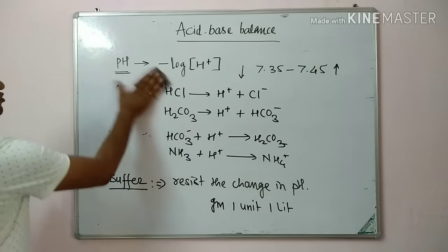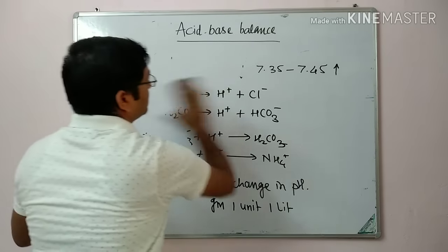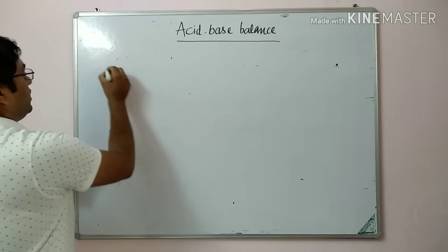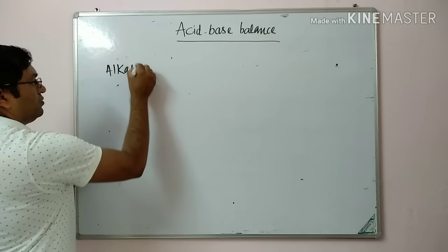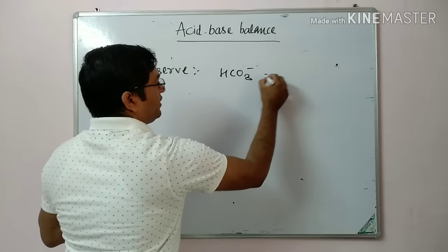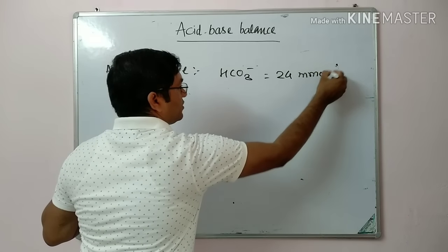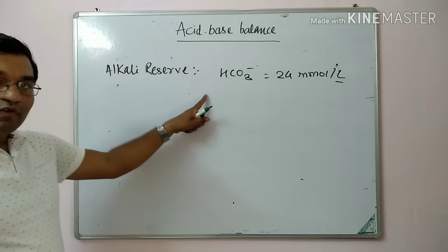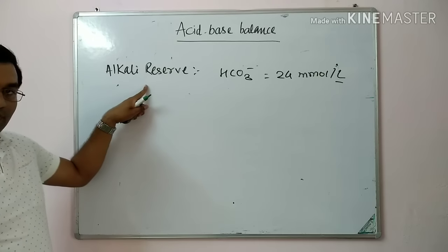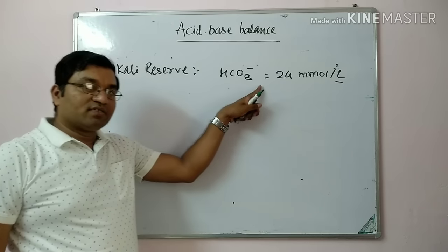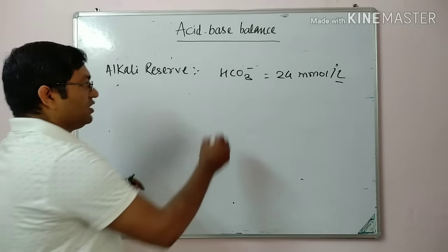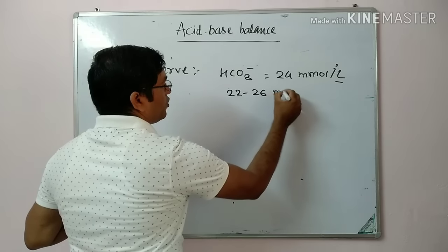Alkali reserve means the bicarbonate concentration, which is 24 millimole per liter. It is the bicarbonate available to overcome the acids synthesized in our body. The normal value is 22 to 26 millimole per liter.